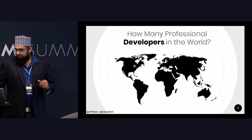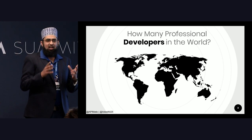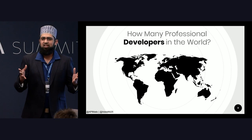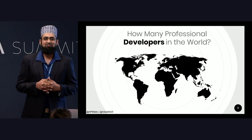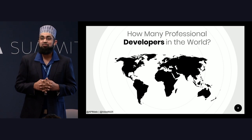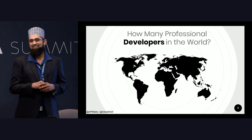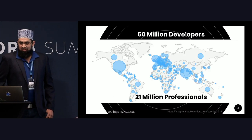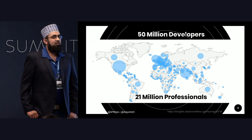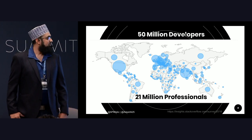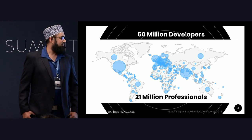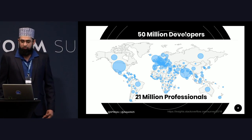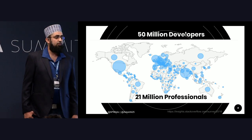Let's begin by asking a simple question: how many professional developers do you think are in the world? According to Stack Overflow, there are 50 million developers, out of which 21 million are professional developers. You can see a distribution from the latest survey of 2018 — the link is given at the bottom.